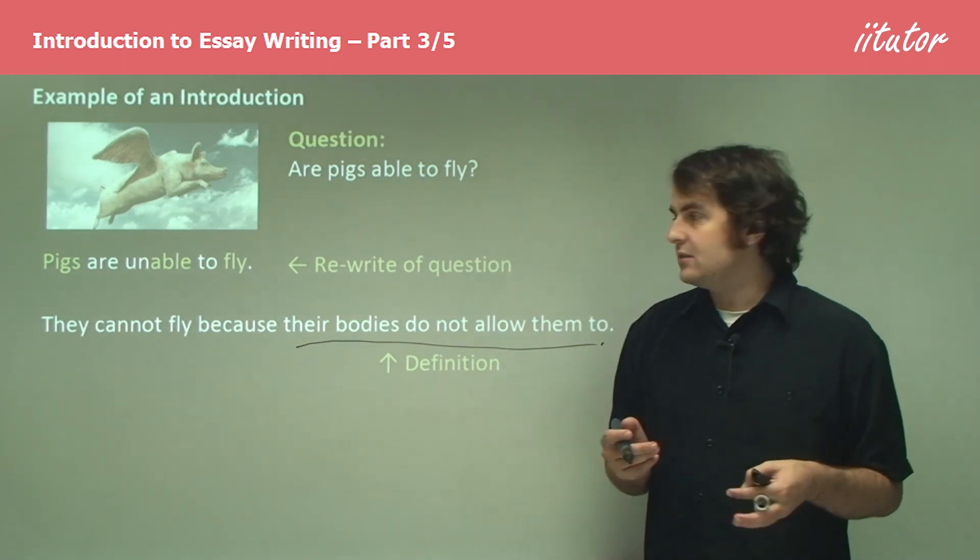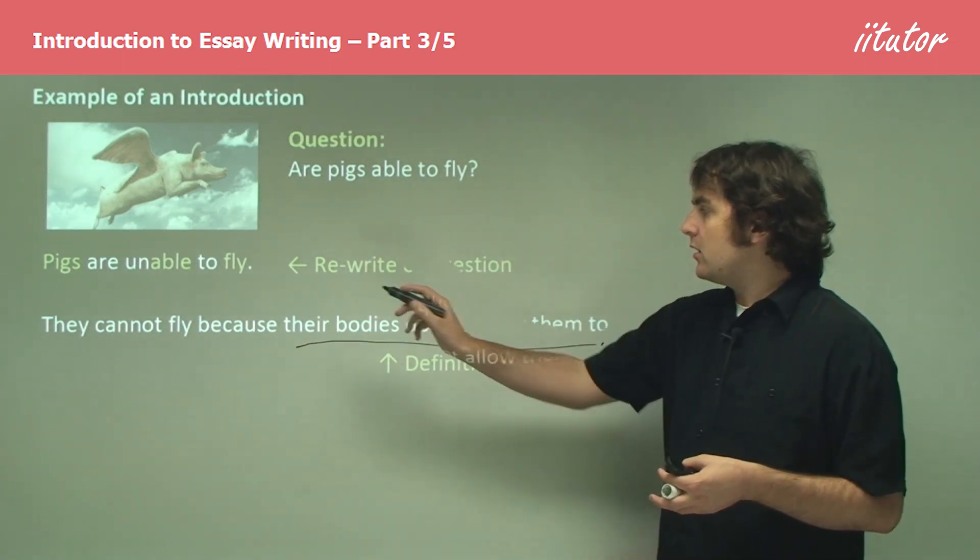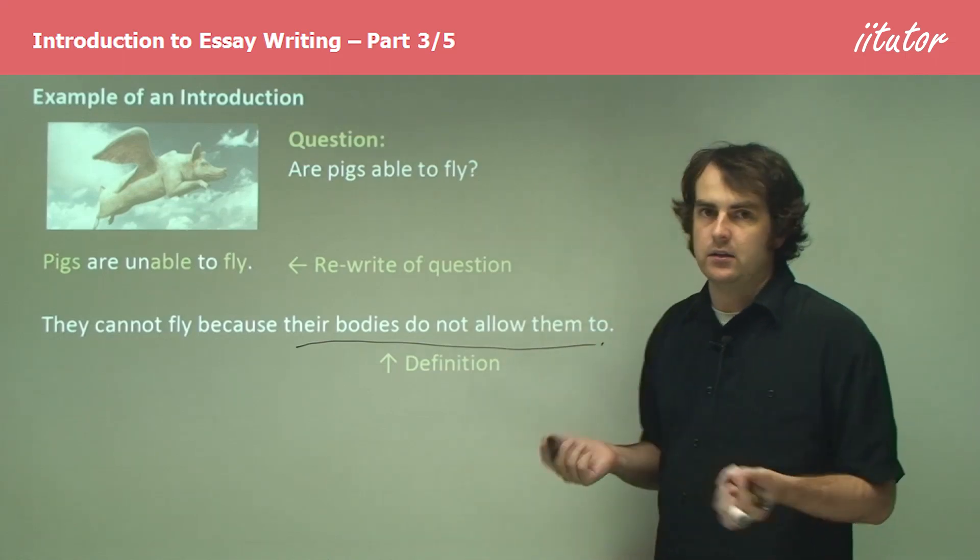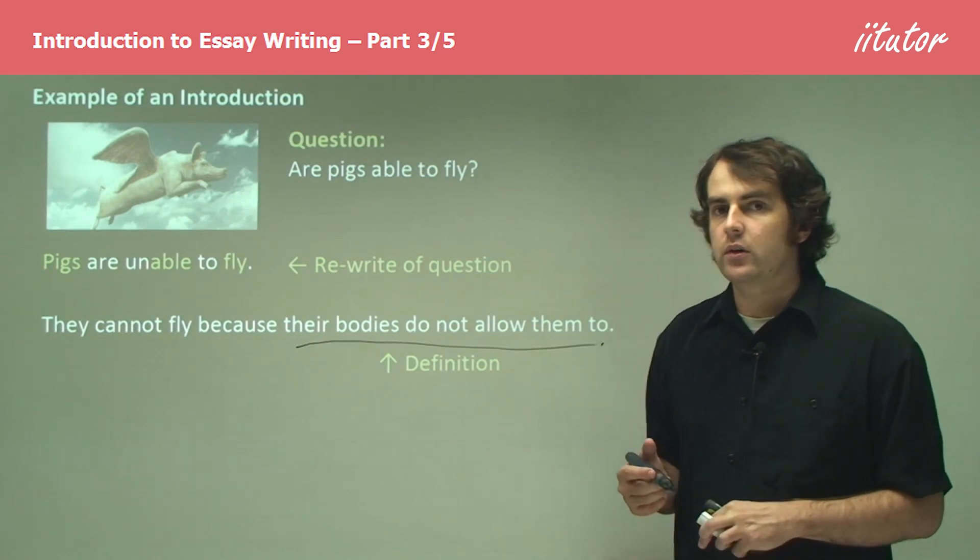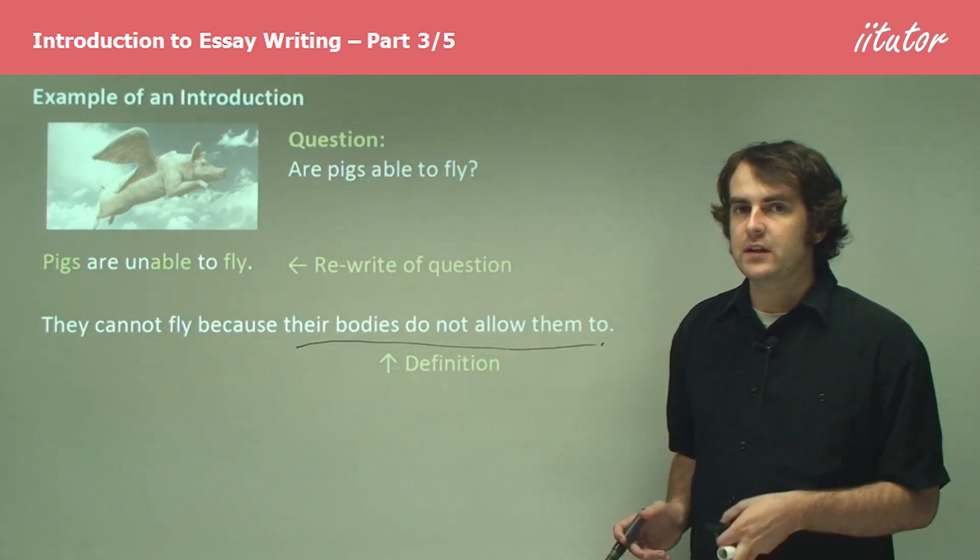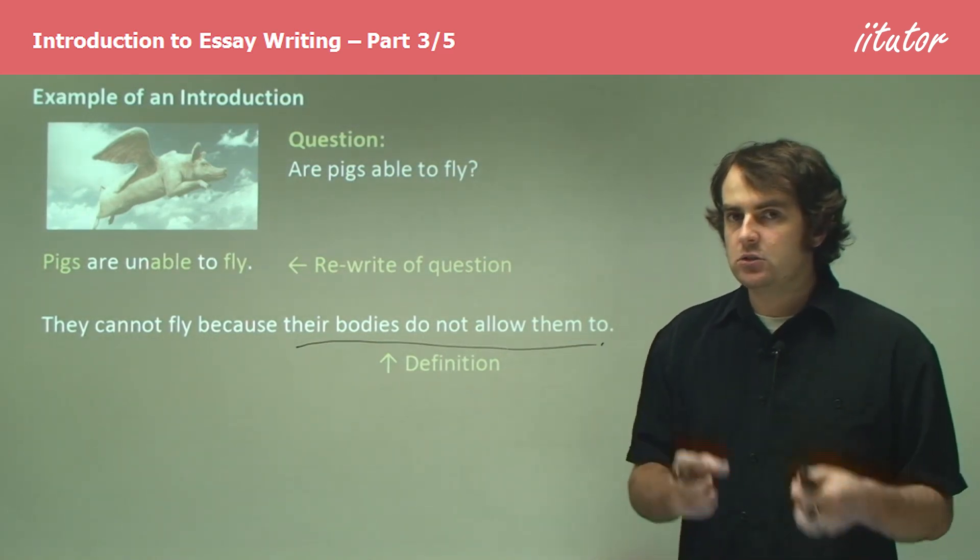If you were to write it as a one sentence answer, you would say, pigs are unable to fly, comma, because their bodies do not allow them to. It just makes it a nice clear opening and it makes it very clear from the beginning what you're talking about, especially if you've got something a little bit complicated and a little bit hard to explain.